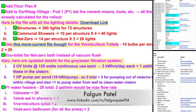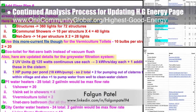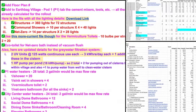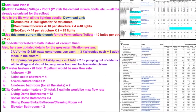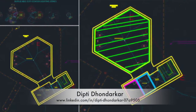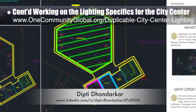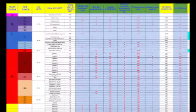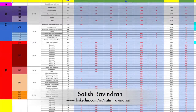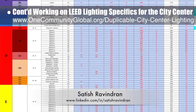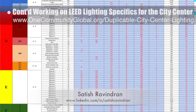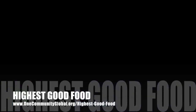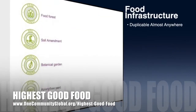Fogu and Patil, mechanical engineer, completed his 14th week volunteering — this week's focus was continuing the analysis process for updating the highest good energy page, with more additions to the city center kitchen equipment list and version 2.0 of the complete details for the earthbag village. Dipty Dondarkar, electrical engineer, continued with her 60th week of work on the lighting specifics for the city center — this week's focus was finishing updates to the lighting zones in AutoCAD, now added to the website. Satish Ruvindran, senior mechanical industrial engineer, completed his third week helping with the LEED lighting specifics, double-checking and updating the lighting zone details.